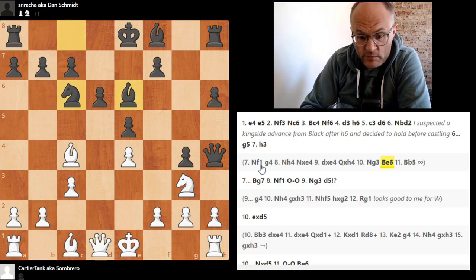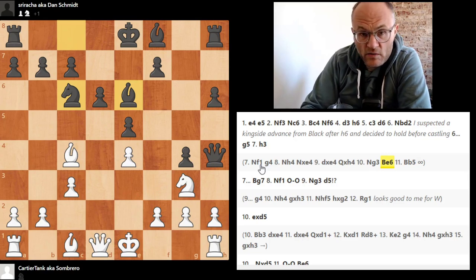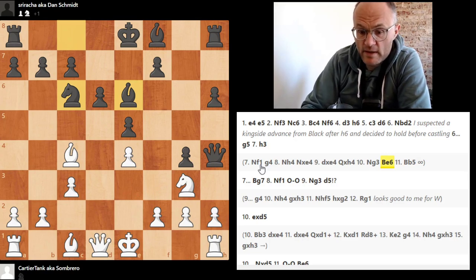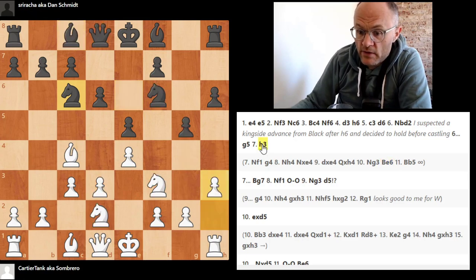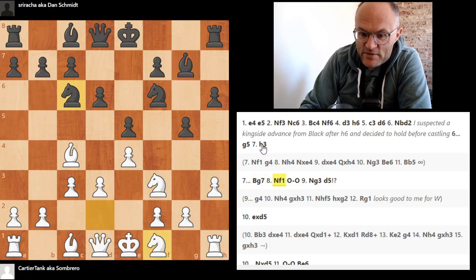Queen e2, for example, would also be a good move, so that we just keep our eye on all the light squares. Definitely like white in this position. But Sombrero's move, it grew on me, h3, and we're just going to control the light squares here.